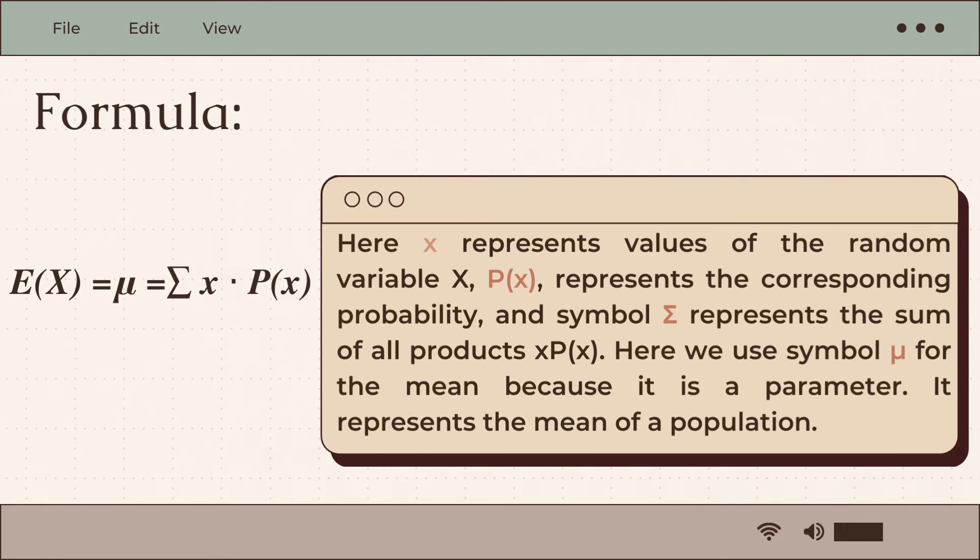In this formula, the small letter x represents values of the random variable of the capital letter X. The p of x represents the corresponding probability, and this symbol represents the sum of all products. Here we use this symbol for the mean because it is a parameter. It represents the mean of a population.